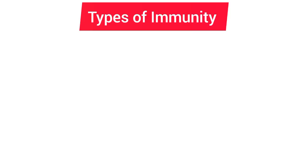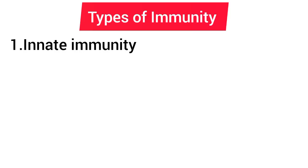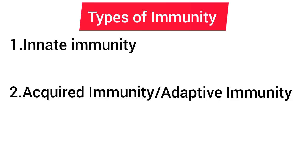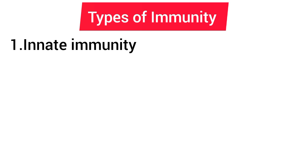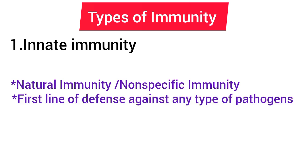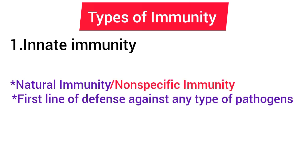Immunity is of two types: innate immunity and acquired immunity. The acquired immunity is also known as adaptive immunity. If organisms enter the body, innate immunity eliminates them before the development of any disease. It is otherwise called the natural or non-specific immunity, and it represents the first line of defense against any type of pathogens.